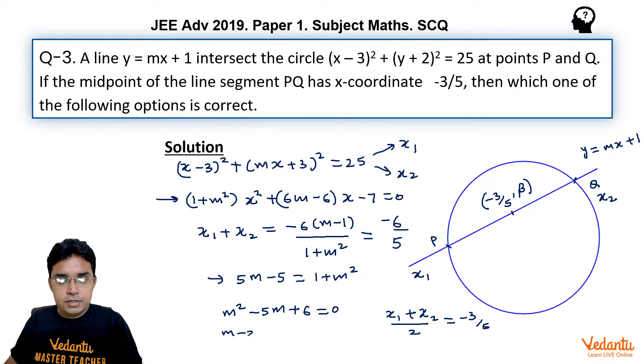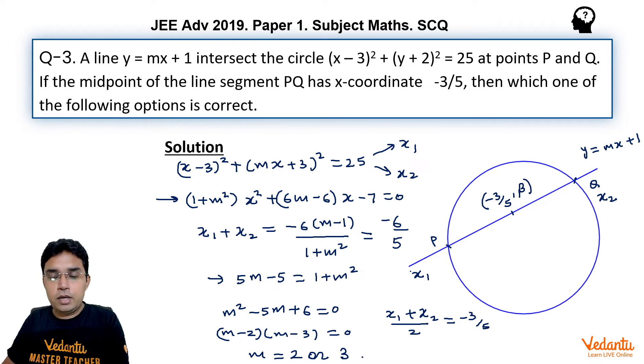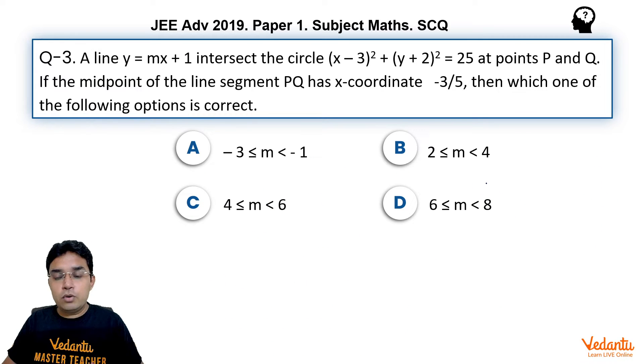Now, this is very easy to factorize. m minus 2 is one factor, m minus 3 is another factor. So the answer for this question is m equals either 2 or equals 3. Let us see what are the options. So m equals 2 or 3, I think only correct option is B.